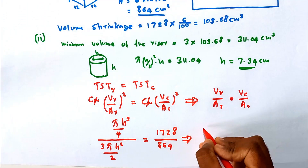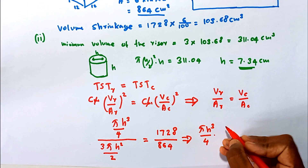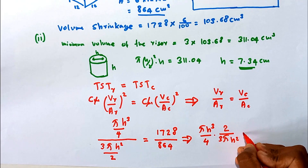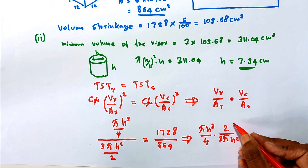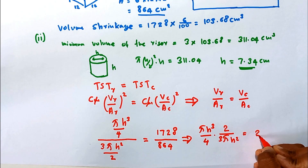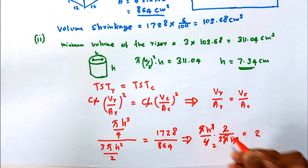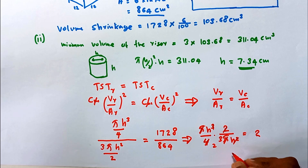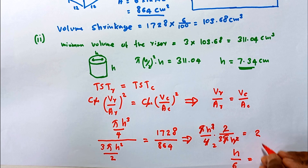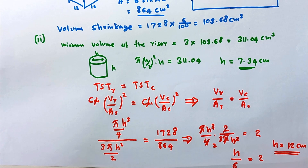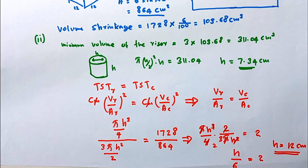Solving the equation, (π h³/4) divided by (3π h²/2) equals 1728/864, which simplifies to h/6 = 2, giving h = 12 cm. For the second consideration, the cylindrical riser must have a height and diameter of 12 cm in order to equalize the total solidification time with the casting.